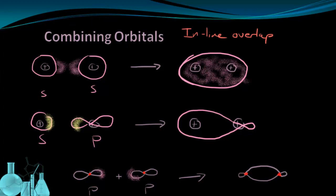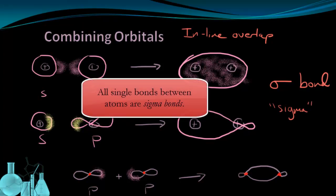Each one of these is referred to as a sigma bond or a sigma molecular orbital. Sigma bonds occur when two orbitals are lined up and overlapped to create a bond. As a rule of thumb, any time you have a single bond between two atoms, that single bond is a sigma bond.